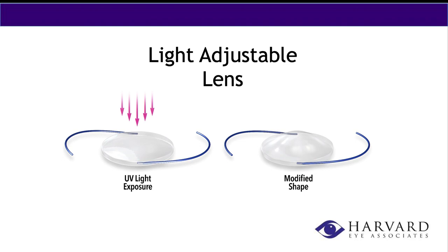Let's say after surgery, two weeks out, we see that you have a little bit of residual prescription left. We can actually dial that prescription into the lens without having to go back into the eye, by utilizing the UV technology built into it. It's a very nice option for patients looking for maximum accuracy and to fine-tune their vision. Good candidates include patients who've had a history of LASIK or PRK, since prior corneal work makes measurements less accurate, and the light adjustable lens mitigates that margin of error.